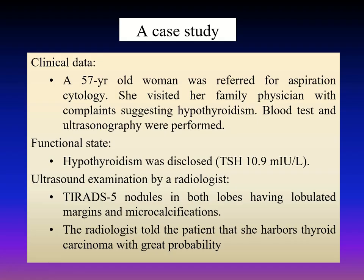First let's see a case study. During an ultrasound scan of a woman with a newly diagnosed hypothyroidism, the radiologist found a suspicious nodule in the right lobe. He considered this as a TIRADS 5 lesion. In addition, he verbally told the patient that the nodule was most likely malignant.